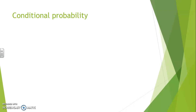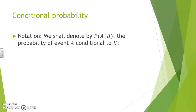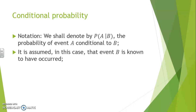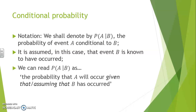So, conditional probability. In terms of notation, we shall denote P of A given B as being the probability of event A conditional to B. It is assumed in this case that event B is known to have occurred, and therefore we could also read this probability as the probability of A knowing B, or the probability of A if B is realized. So we can read P of A given B as the probability of A will occur given that, or assuming that, B has occurred.